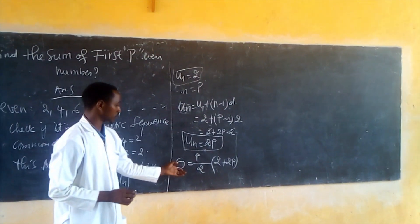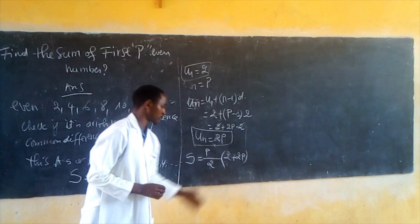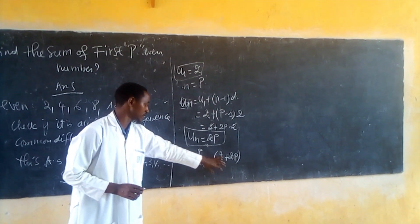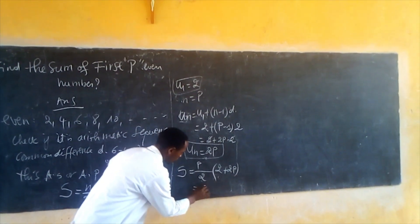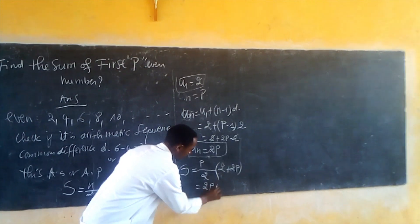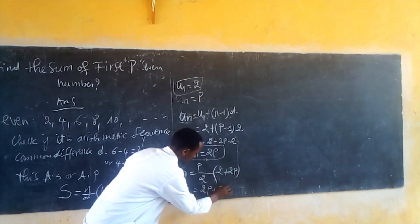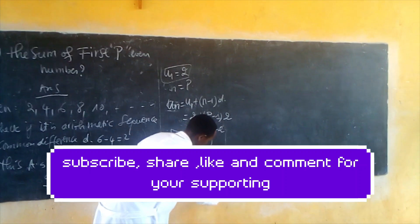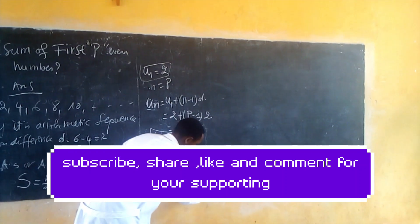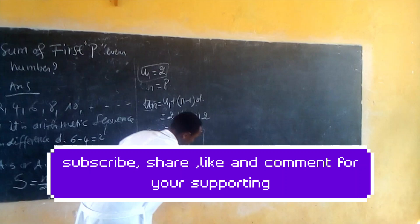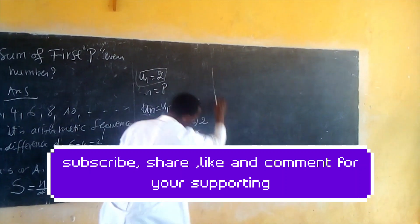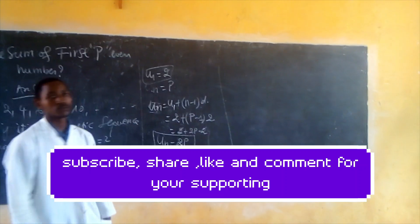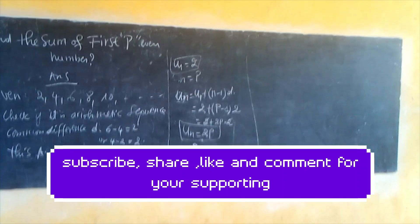We need to factor this. So this becomes P times (2 plus P) divided by 2. So this is the answer. Thank you.